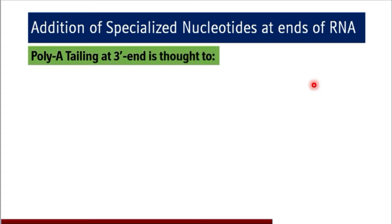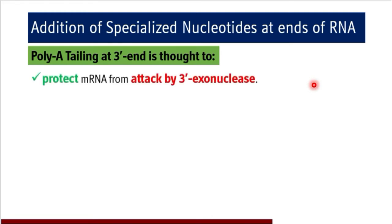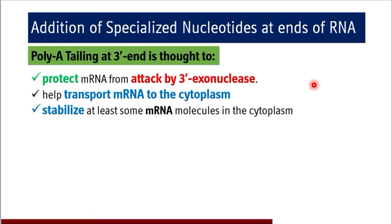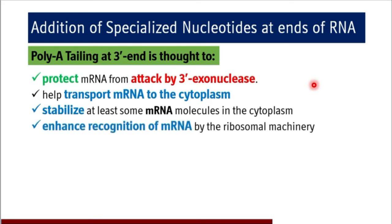The poly-A tail at the 3' end is thought to protect mRNA from 3' exonucleases. The poly-A tail also helps transport mRNA to the cytoplasm from the nucleus. It stabilizes at least some mRNA molecules in the cytoplasm. They enhance recognition of mRNA by the ribosomal machinery. So both the 7-methylguanosine cap and the poly-A tail help transport mRNA from nucleoplasm to cytoplasm, stabilize the mRNA molecule in the cytoplasm, enhance recognition of mRNA by the ribosomal machinery, and protect mRNA from 5' to 3' and 3' exonucleases respectively.